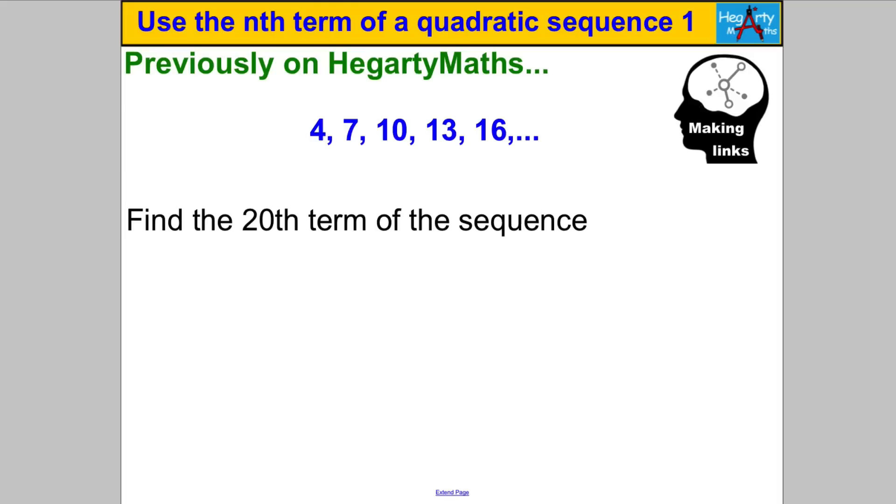Well what you should have done is you should have worked out the nth term and then substitute n is 20 in to find what the 20th term was. Now the nth term of this sequence was 3n add 1. You found that it had a common difference of 3 and you wrote the three times tables above and then afterwards you realize that our sequence is one more than that so it's 3n add 1. Then you substituted n is equal to 20 into your formula for the nth term and you got yourself that the 20th term would have been 61.